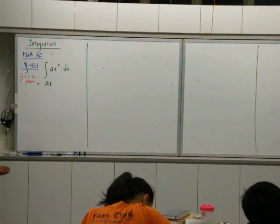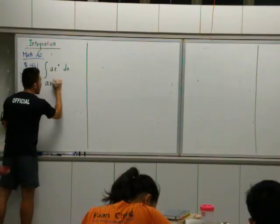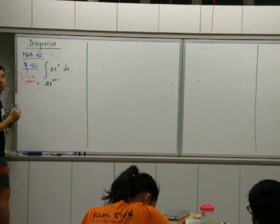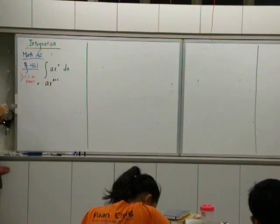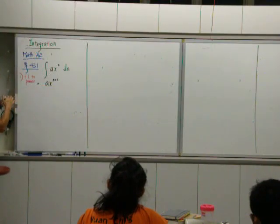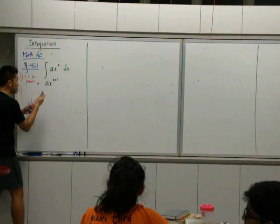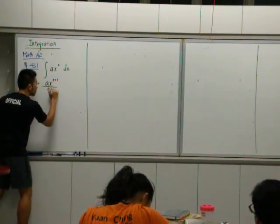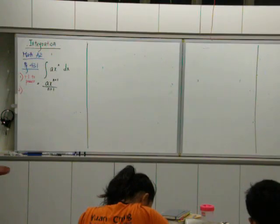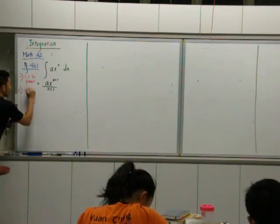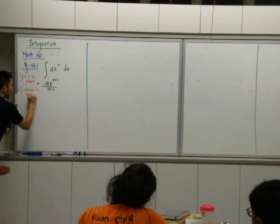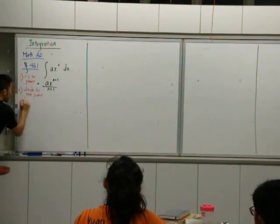So you add one to the power, that is step number one. I will write down m plus one. So instead of bringing down in front, make a good guess, what do I do with this new power? Because when you bring down in front, it's seen as multiplication, am I right? What is the reverse of multiplication? Division. So what you need to do is divide by the new power.